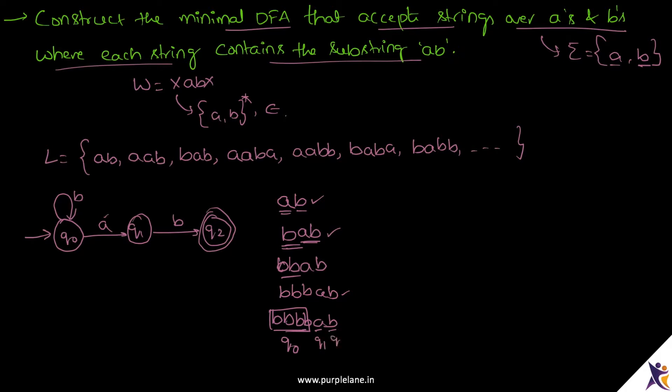Once I see an A I move to Q1, and if I see B from Q1 I go to Q2 and accept the string. So Q0 is complete — it has a transition over A and a transition over B. Now coming to Q1: Q1 has a transition over B but it does not have a transition over A.